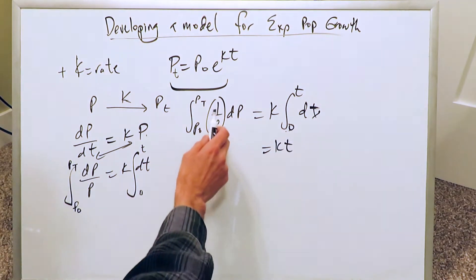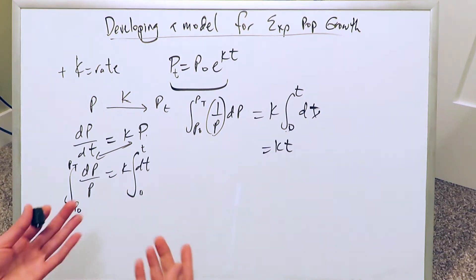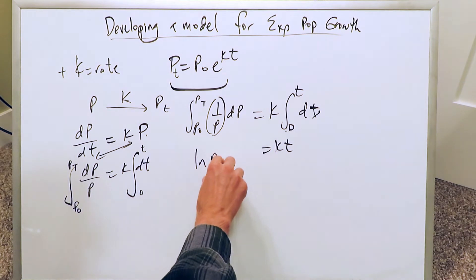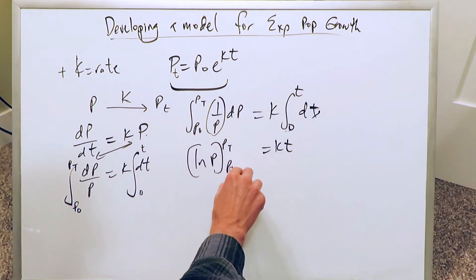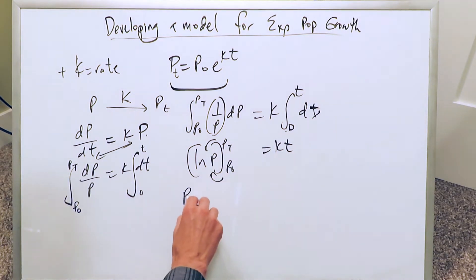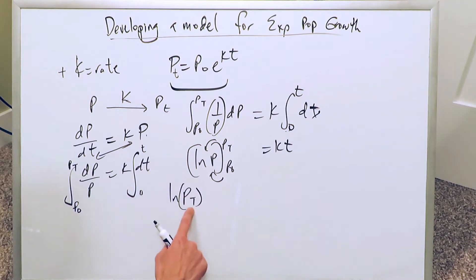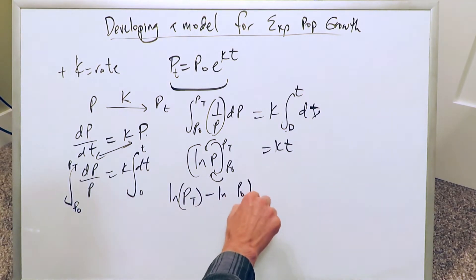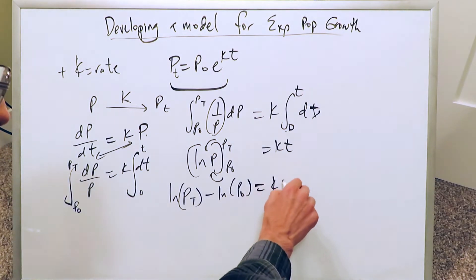On the left side, you have P to the power of minus 1. Using the rule with n plus 1 divided by n plus 1, this brings out the natural log. When you apply the upper and lower limits and take the difference, you end up with: ln(Pt) − ln(P₀) = kt.